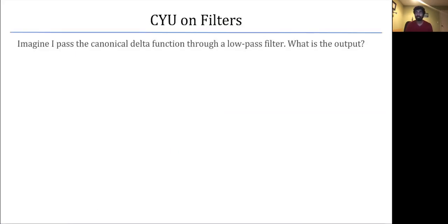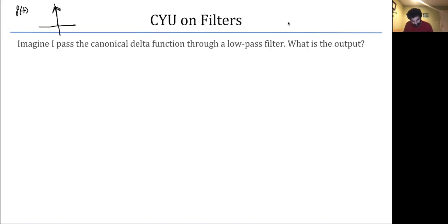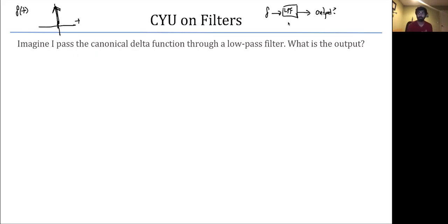Here's a check-your-understanding question on filters: imagine we pass the canonical delta function delta of t through a low pass filter. What is the output? Feel free to pause the video and take a stab at this question.